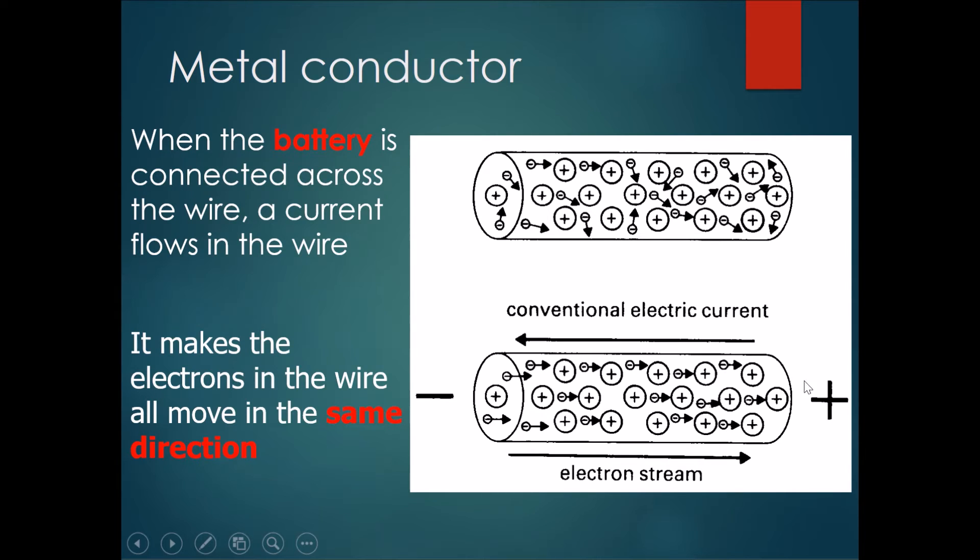This moving of electrons in one direction causes the current to occur and they all move towards the plus side of the battery and move away from the negative side of the battery.